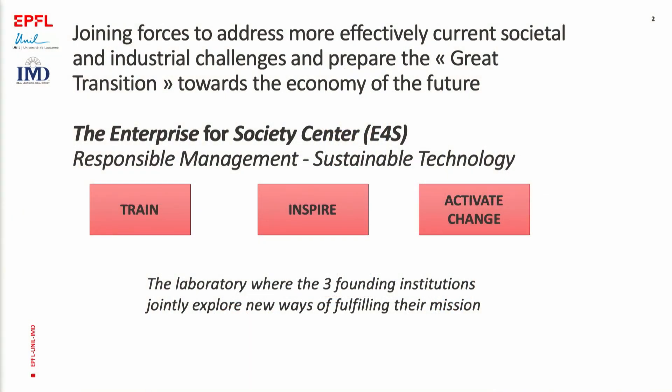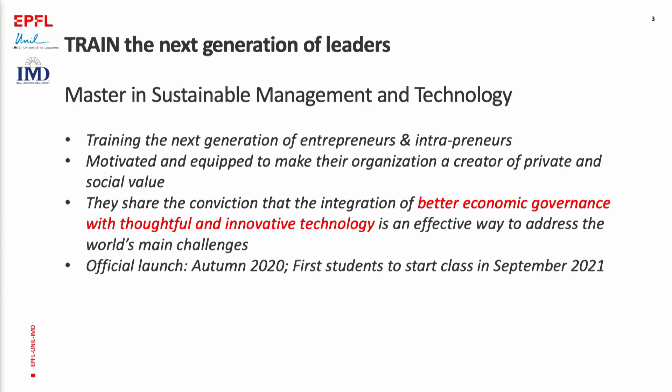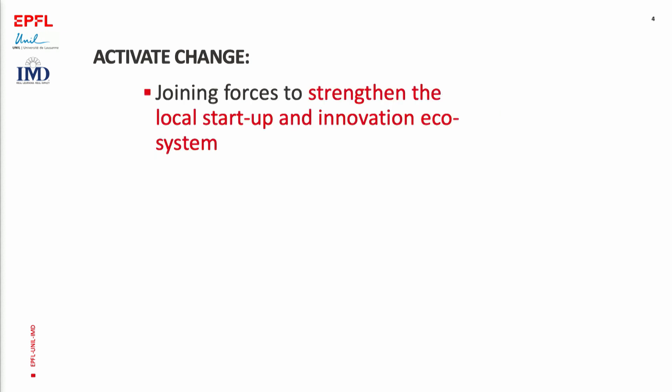We have three institutions for a triangle and we call it the Enterprise for Society Center — joining forces for responsible management and sustainable technology. This session is organized under this umbrella. Under e4S, we have three tracks: train, inspire, activate change. We are going to start a new master's program in sustainable management and technology, jointly offered by the three institutions — really a premier.